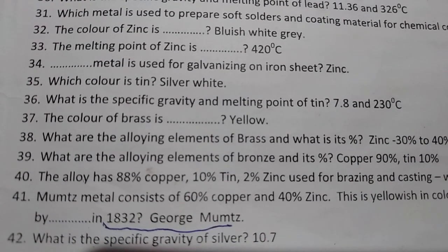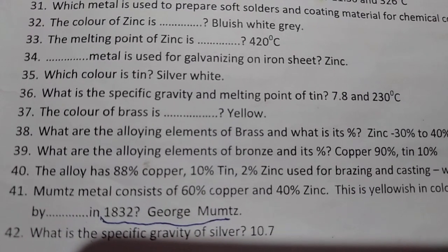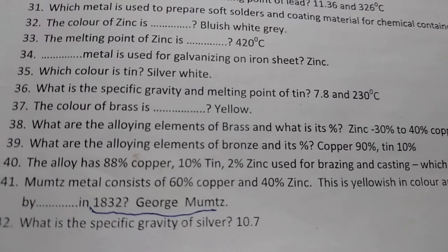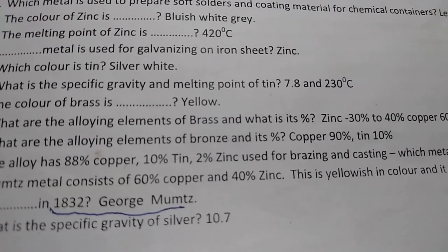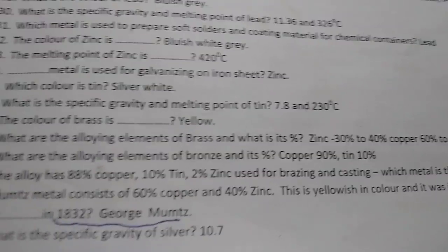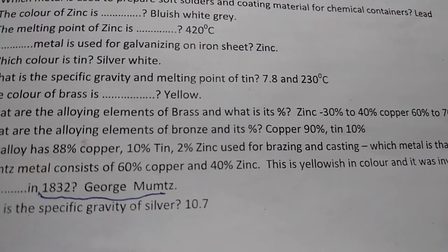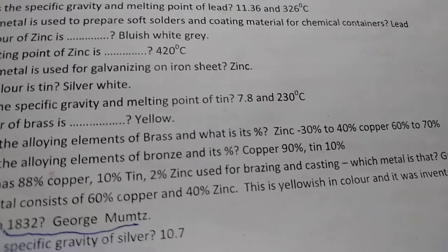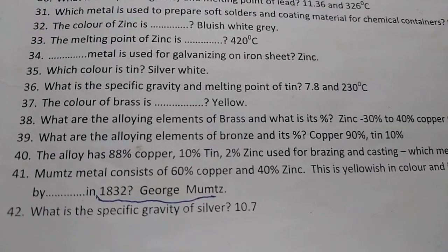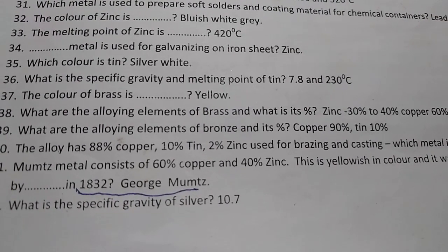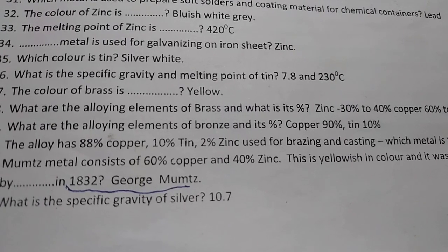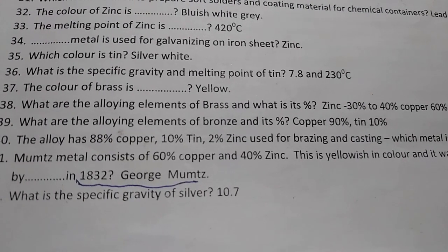The color of brass is yellow. The alloying elements of brass are zinc and copper: zinc 30 to 40 percent and copper 60 to 70 percent. The alloying elements of bronze are copper and tin: copper 90 percent and tin 10 percent.